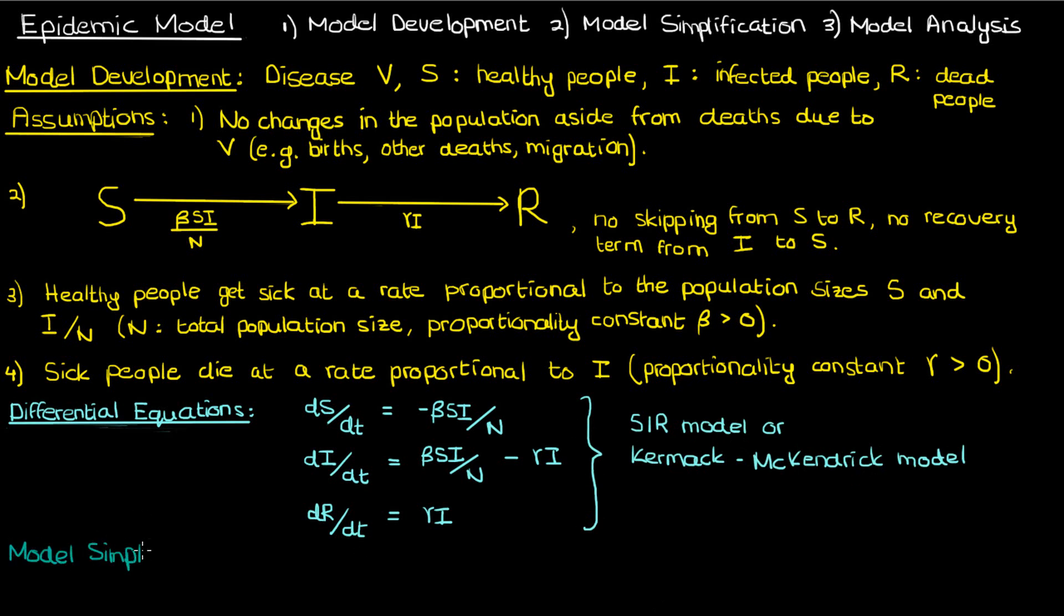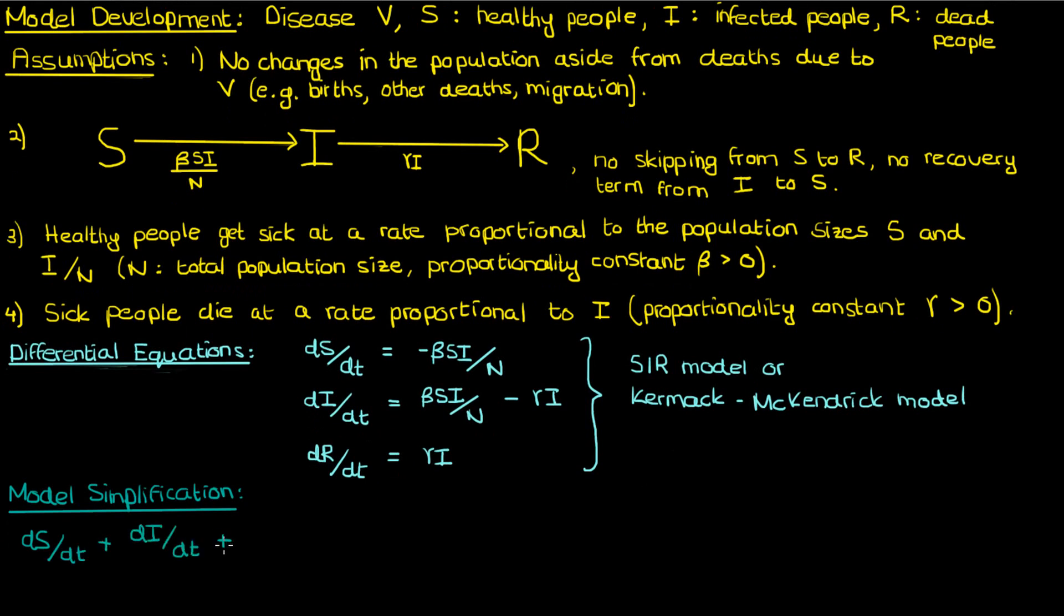The next step is to simplify it as much as possible and make it more amenable to analysis by hand. Let's first show what happens when we add all the differential equations together. The beta terms cancel, and so do the gamma terms. So when we add the ODEs we get 0.